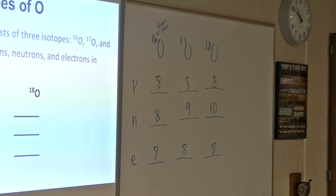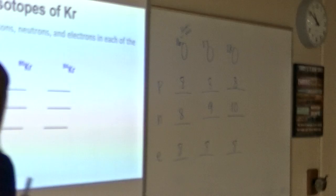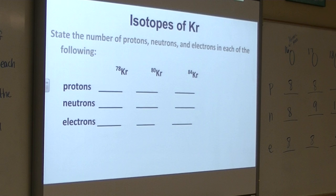Okay, so you try one. These are the isotopes of Krypton. So Krypton-78, Krypton-80, and Krypton-84. So I'd like for you to write these down now and find Krypton on your periodic table.